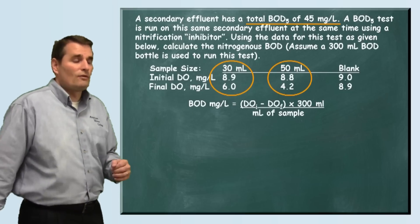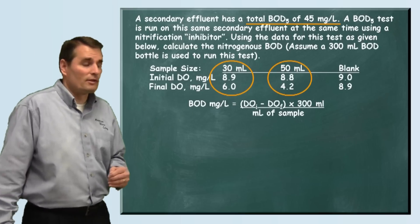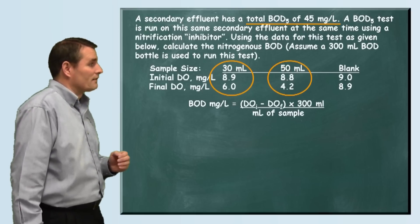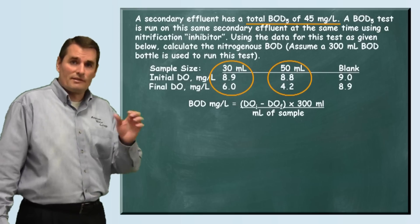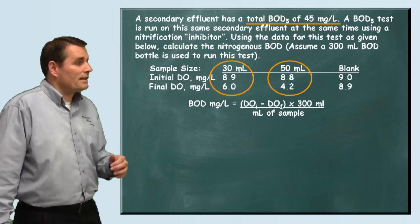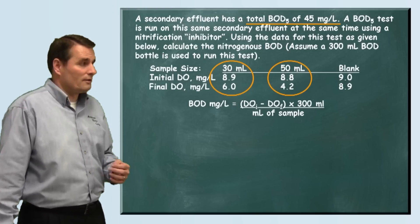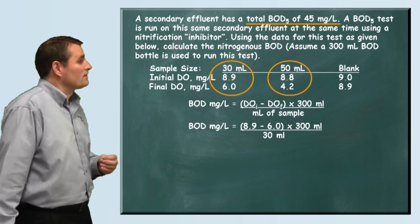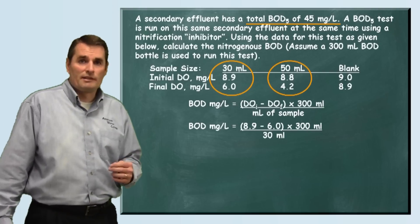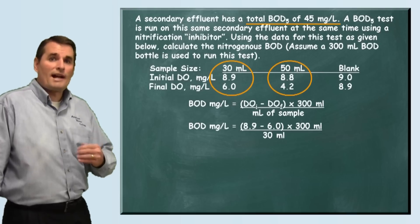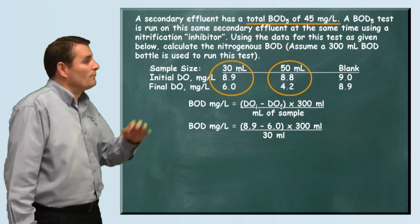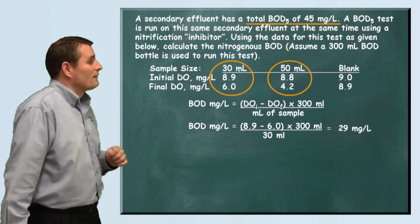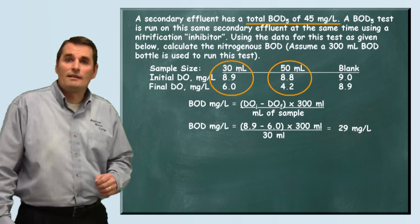The formula we're going to use is our BOD formula. To find BOD in milligrams per liter, we use: initial dissolved oxygen minus final dissolved oxygen, times 300 milliliters (the size of the sample bottle), divided by the milliliters of sample added to the bottle. For the 30 mL sample: our initial dissolved oxygen was 8.9 milligrams per liter and our final was 6.0. So we subtract 6.0 from 8.9, multiply by 300, and divide by 30 mL. We see that our BOD in this instance is 29 milligrams per liter.